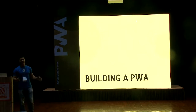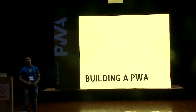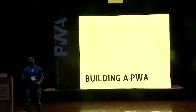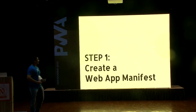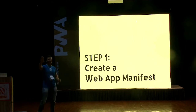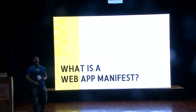So let's go into a little bit of the technical side of it. What are the bare minimum things needed to build progressive web apps? Step one: create a web app manifest. Web App Manifest is nothing but just a JSON file that contains some meta information about your website. It tells your browser how your web application should behave when it's installed on the user's mobile.